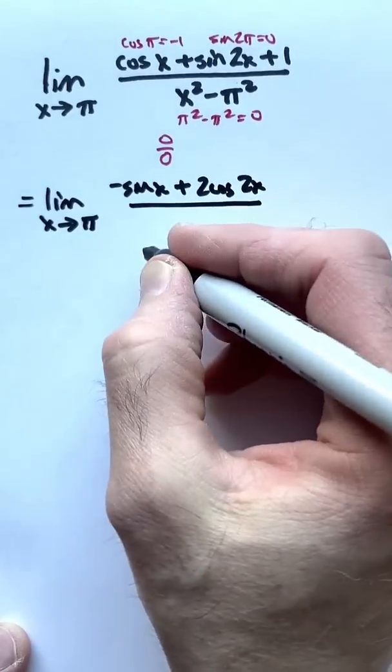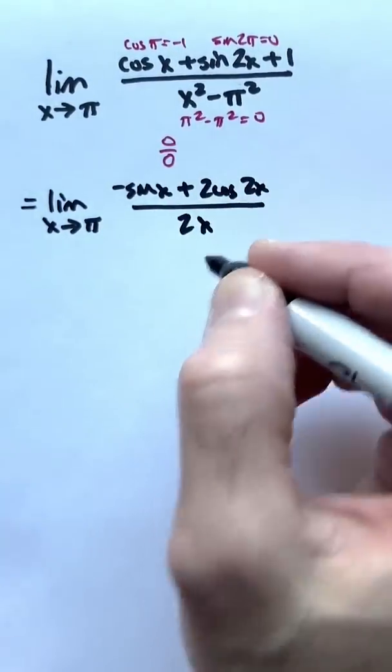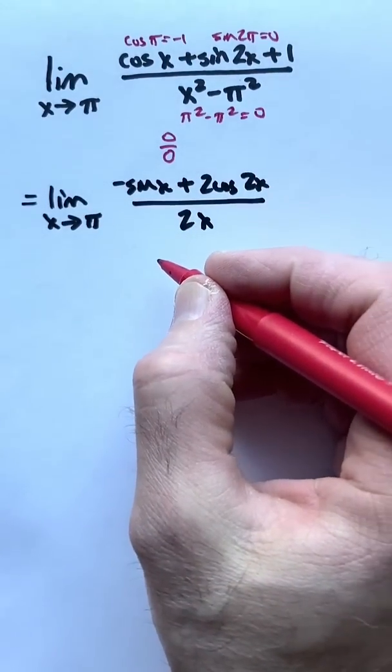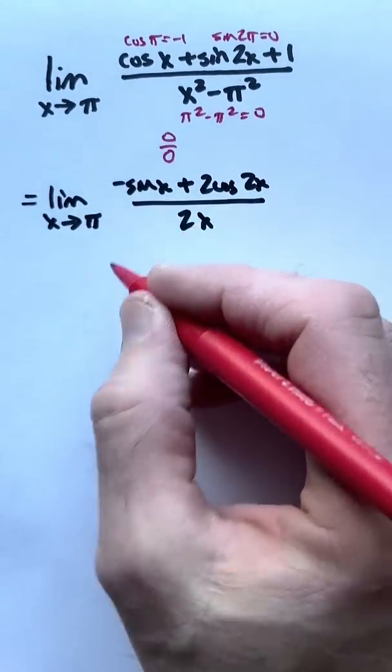On the bottom, the derivative of x squared minus pi squared is 2x. But again, is this a 0 over 0 indeterminate form? Plug in pi.